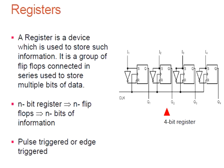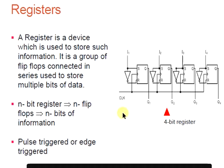If you want to store two-bit data, you need to use two flip-flops. If you want to store four-bit data, you need to use four flip-flops. Generally these flip-flops will be connected to a clock pulse so that they respond according to the clock pulse — it can be a positive triggered or negative triggered clock pulse. Here you can see a four-bit register where the clock signal is connected to all four flip-flops.